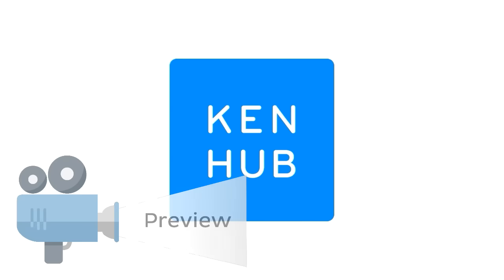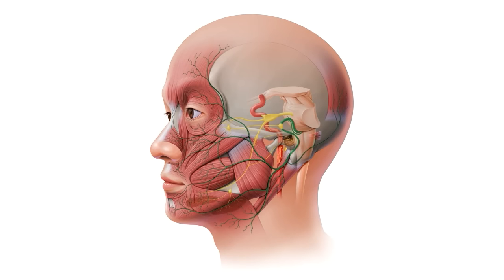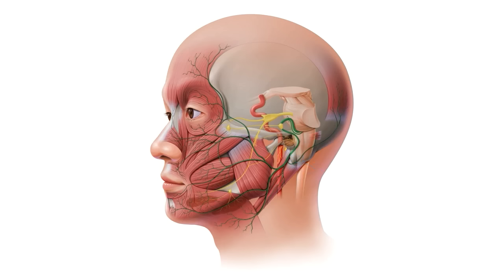Hey everyone, it's Nicole from KenHub and today we're going to be talking about the facial nerve. The facial nerve is a highly complex and sometimes difficult nerve to grasp due to it having multiple functions and a fairly intricate path. In this tutorial we're going to take a closer look at its anatomical course. We'll start by looking at a schematic of the facial nerve — a human head from a lateral left view with some internal organs visible and the facial nerve highlighted in green, which will be our base image throughout the tutorial.